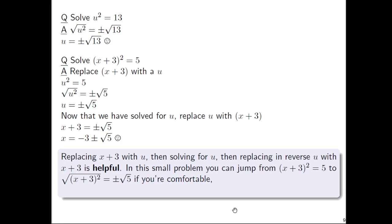In a problem that's this small, you could, if you feel comfortable, jump directly from (x+3)² = 5 to the following. You'd square root both sides. You have √(x+3)² = ±√5, if you're comfortable, but later this technique with using this u will be helpful, because it'll allow us to focus on just one thing at a time.